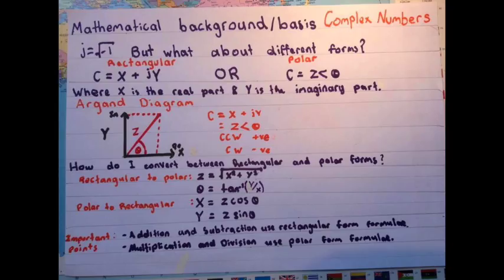They can both be represented in an Argand diagram where X is the real part and Y is the imaginary part. It is necessary to know how to transform rectangular to polar and vice versa.